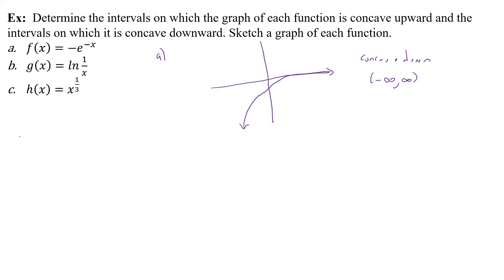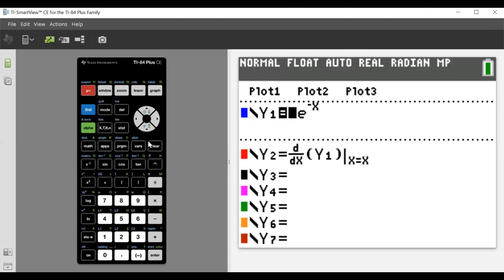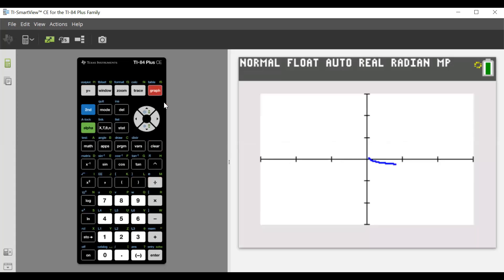All right, so for part b, we have g(x) = ln(1/x), okay? Well, we know what ln(x) looks like, so what's the ln(1/x)? Well, let's go over here and type it in. So we're going to do ln(1/x), and what does that look like?